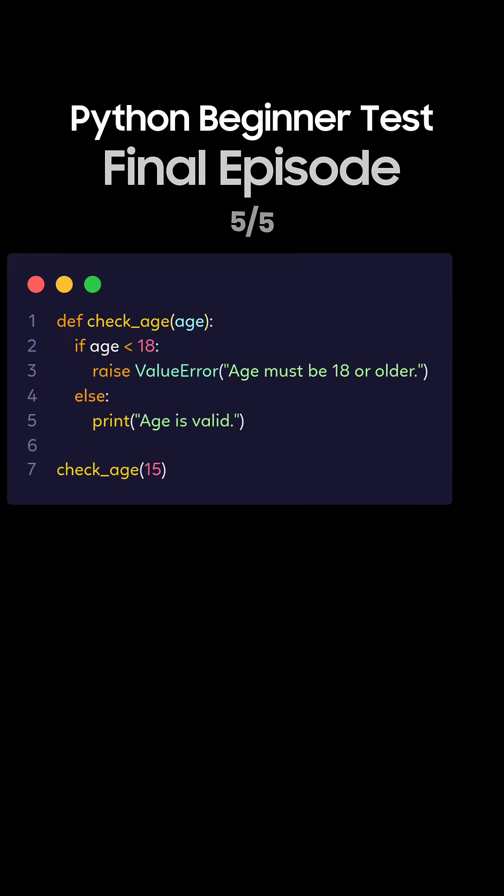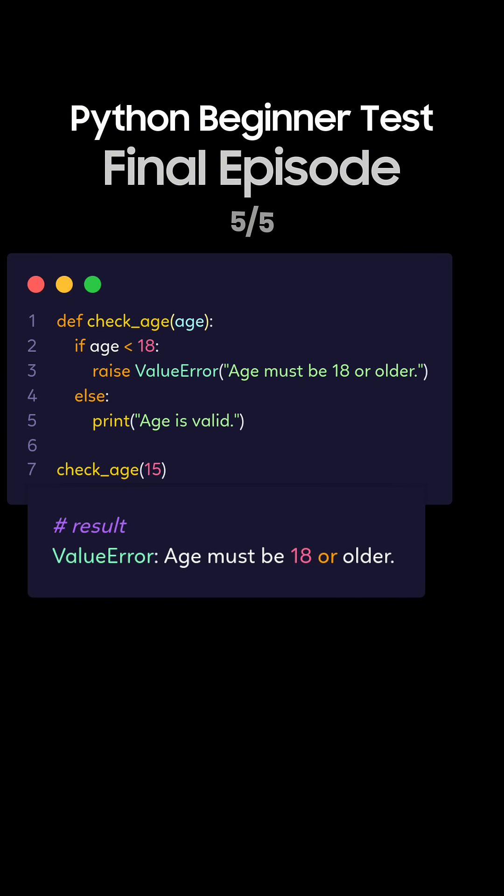Question 5: What's the output of this Python code for raising a custom exception? This is the correct answer. Since the age is 15, the ValueError will be raised with the message.